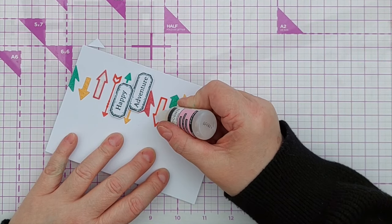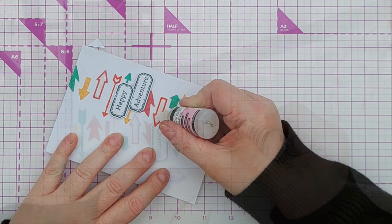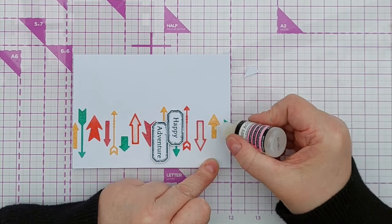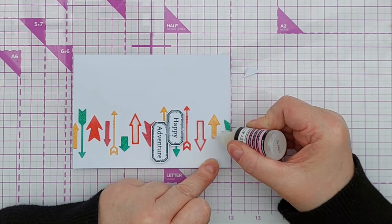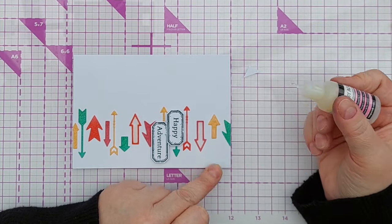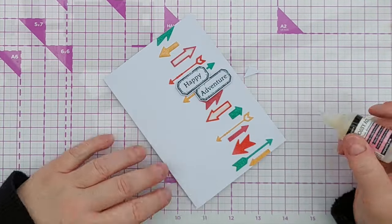Glossy accents tends to come out a bit cloudy and then dries clear and I also added some glossy accents onto some of the solid arrows. I didn't do all the arrows because I wanted a bit of variation across the card.